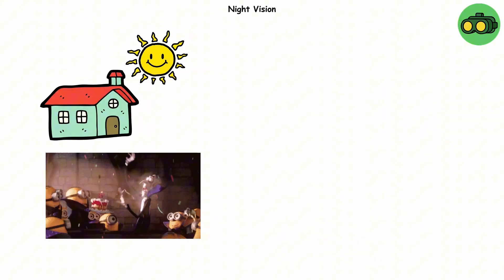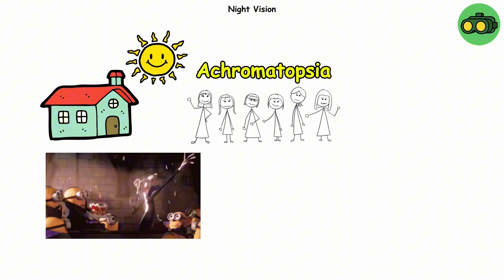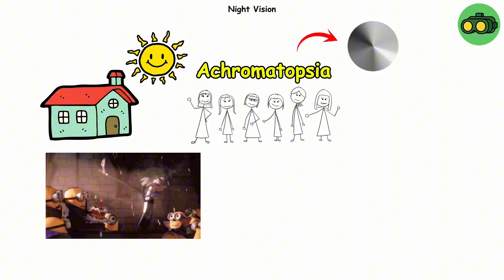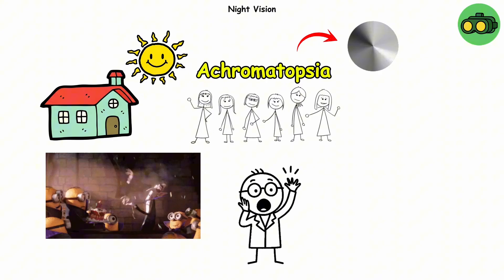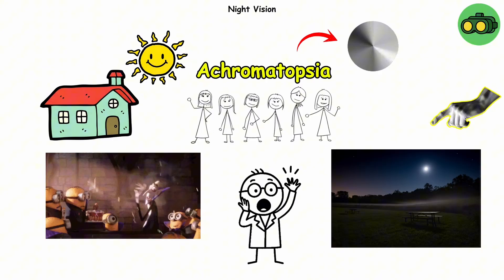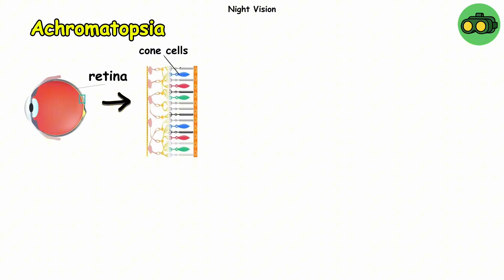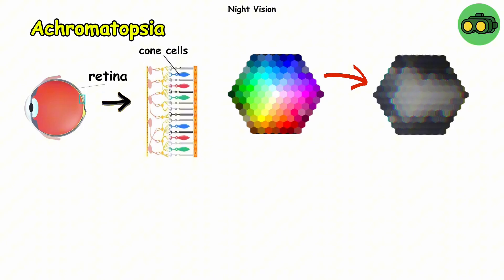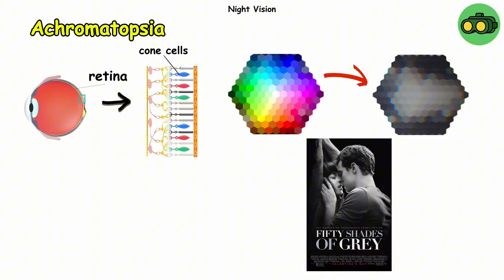Night vision. Picture stepping out under a bright summer sun and instantly squinting like a vampire at a beach party. That's everyday life for people with achromatopsia, a rare condition where their eyes can't see color. But here's the twist. In the dark, they practically level up to night vision mode. Achromatopsia happens when the cone cells in the retina, the special eye cells that sense color, don't work properly. So their world is more 50 shades of gray.